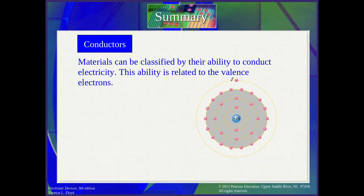Now let's see what a conductor is. A conductor is a material. Nature has many materials — like silicon, metal, copper. Materials can be classified according to their ability to conduct electricity, meaning moving electricity inside a wire for example. Inside the wire there is a material, and one of its main characteristics is the ability to conduct or not conduct electricity.